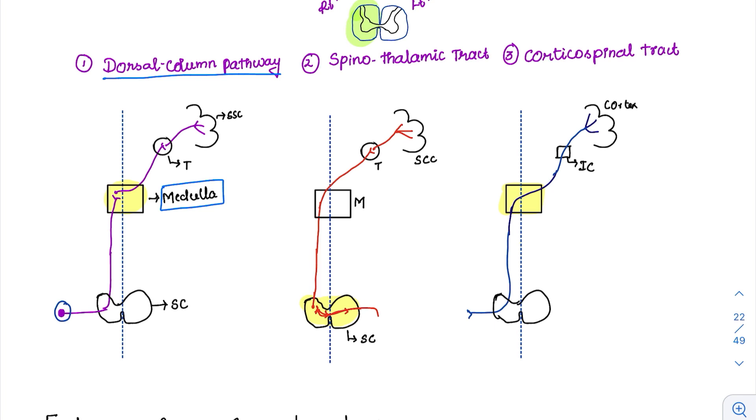Then it went to the thalamus and finally to the somatosensory cortex. Then where was the crossing over happening for the case of spinothalamic tract? This spinothalamic tract, as it has been highlighted here, the crossing over is happening at the level of the spinal cord itself. They will cross, then they will ascend. If you want, see it from the sensory system again.